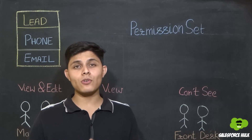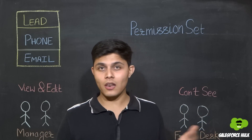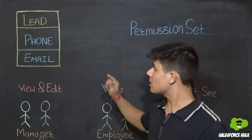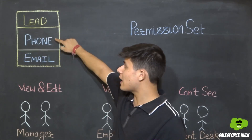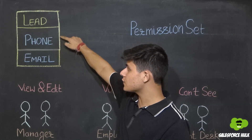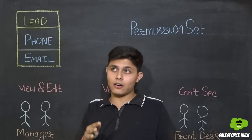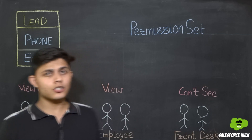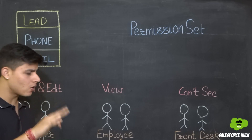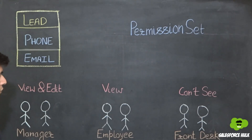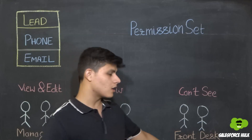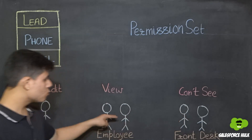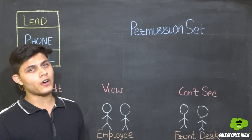Let's see an example to understand Field Level Security very well. Here is a Lead object with two fields — Phone and Email — on which we want to set Field Level Security. We have three profiles in our org: Manager, Employee, and Front Desk Executives, with two users in each profile.